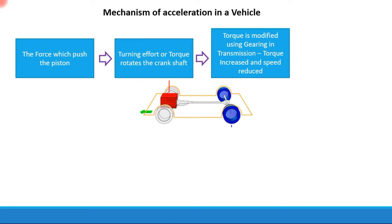Basically, if you have a gear with a smaller diameter driving a gear with a larger diameter, the torque in the smaller diameter gear gets multiplied in the larger diameter gear, but the power remains the same. This is the concept used in the transmission to increase the torque.